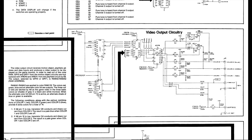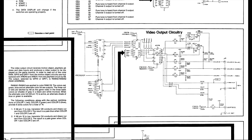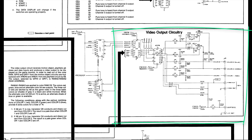Here are the schematics for the video output circuitry. Over here we have where the colors are actually turned into electronic signals and sent to the monitor. Over here we have the color PROM. All this stuff is actually common to both the sprites — the motion sprites — as well as the tiles, so none of this is going to be the problem.